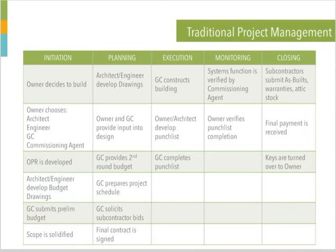This is a typical project lifecycle for a design-bid-build project. As you can see, it is a hierarchical process. The owner starts the ball rolling, hires the designers — the architect and engineer — sends it out to bid, hires the GC, who then builds it. The designer comes in at the end to check it all out, and then the keys are turned over to the owner. The design-build project is only slightly different. Teamwork is almost an accident in the traditional project lifecycle — it happens, especially if all the stakeholders have worked together before, but teamwork is not a formal part of the process.